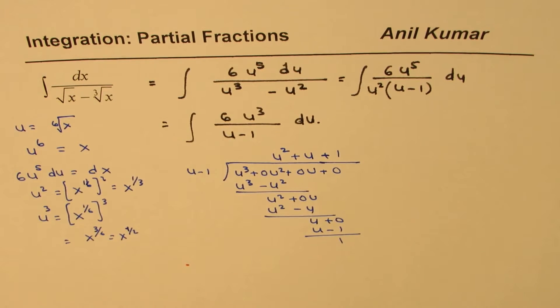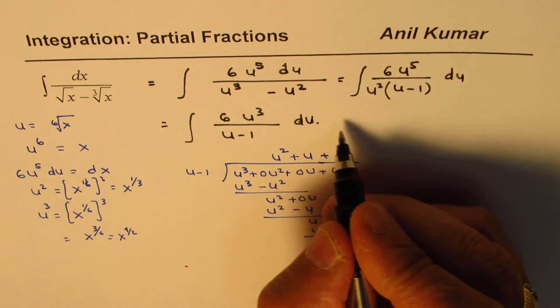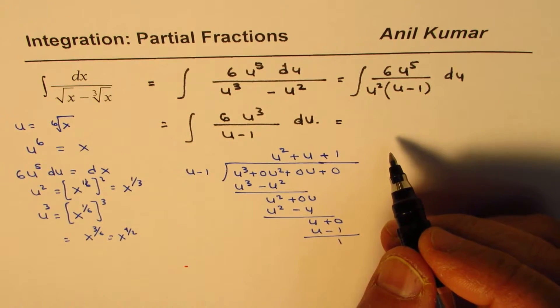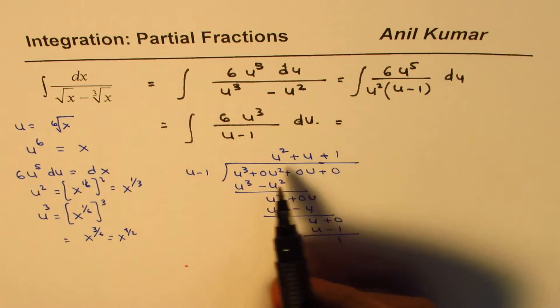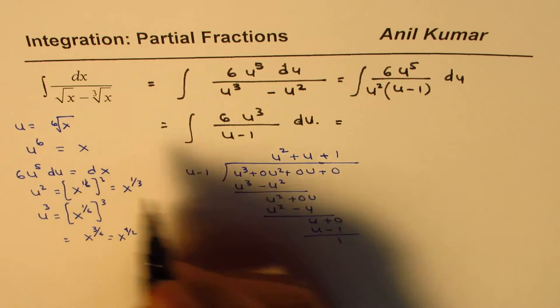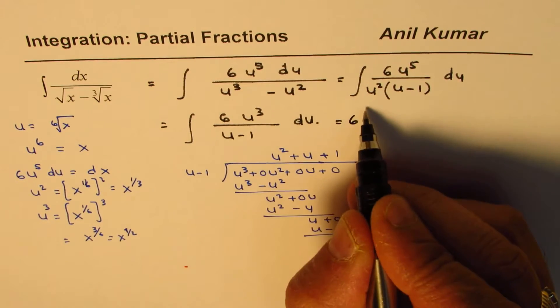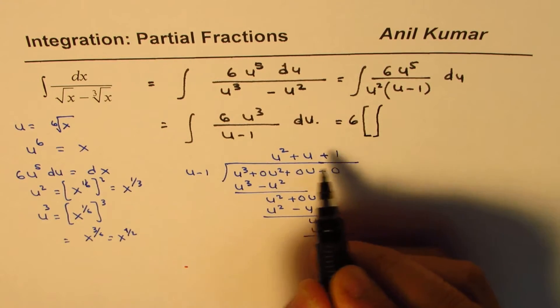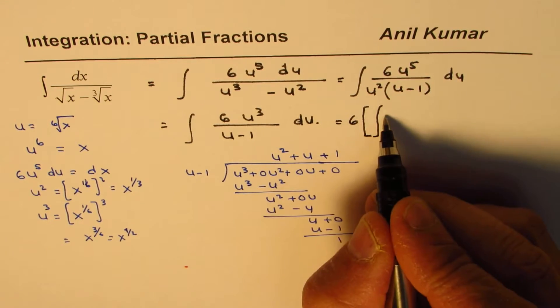So looking into this, we can actually write all this as, okay, so I did not take 6 into consideration. So I will keep 6 outside. So I will put 6 outside. And here we have integral of, that is,